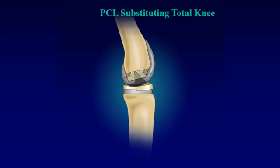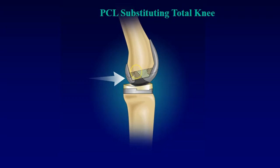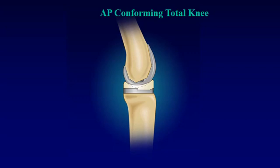In a posterior cruciate substituting knee, the cam and spine have been modeled to engage at 20 degrees of flexion, but most posterior cruciate substituting knees do not engage at this point. The anterior-posterior stability is entirely based on how the condyles fit with the tibial geometry. But even when the cam and spine might engage, a posterior-to-anterior force moves the femur forward on the tibia and could result in increased loads on the extensor mechanism. A fully AP conforming knee prevents the posterior-to-anterior loads from moving the femur forward, thus sparing the extensor mechanism of some of that force it would have to generate to pull the femur backwards.